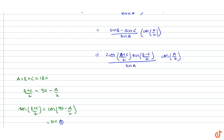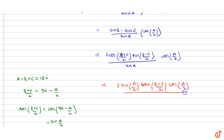Now using the identity sin 2θ = 2·sin θ·cos θ, sin A = 2·sin(A/2)·cos(A/2). Substituting this in the denominator, the 2·sin(A/2)·cos(A/2) terms cancel out completely.